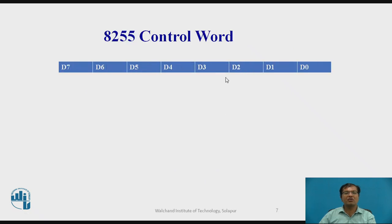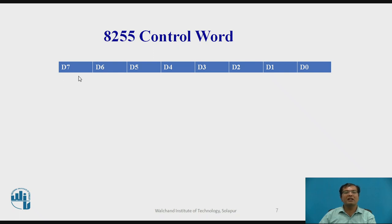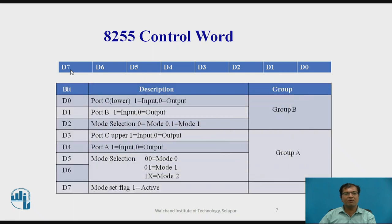Let us have a glimpse at the control word format of 8255. The control word format has 8-bit width, D0 to D7. It supports two different cases: one based on input and output mode, and the second one is bit set and reset mode. The D7 position indicates which type of format it is.